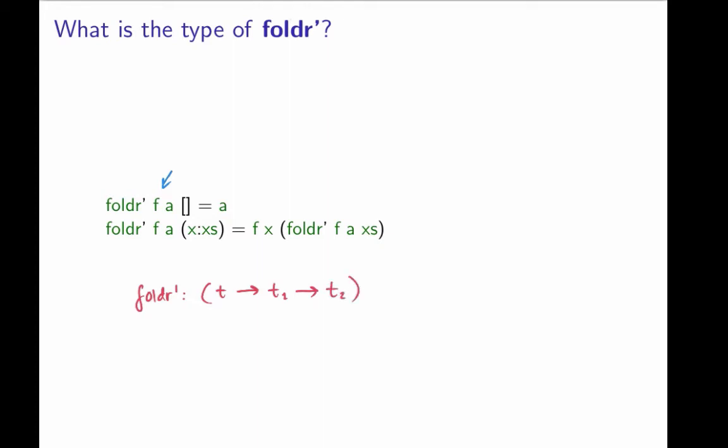We'll figure out what t1 and t2 are in a moment. And then the next argument is something, the initial value of type t3. And then we take an argument of list type, and to figure out what the list type is, we'll figure that out in a moment. t4. We'll need to look at what the result type is also. What's the result type? It's some t5.